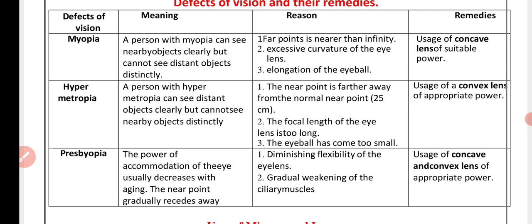Presbyopia: the power of accommodation of the eye usually decreases with aging. The near point gradually recedes away. Reason: diminishing flexibility of the eye lens, gradual weakening of the ciliary muscles. Remedies: usage of concave and convex lens of appropriate power.